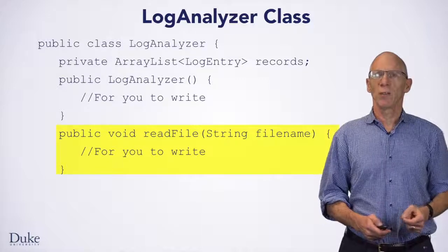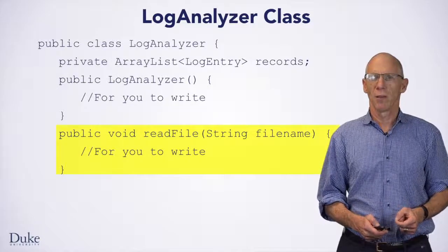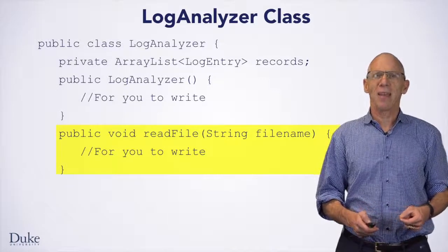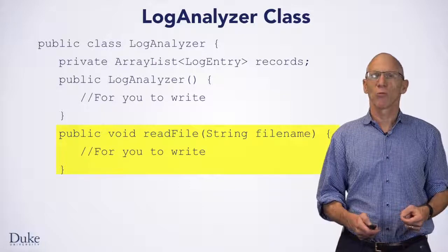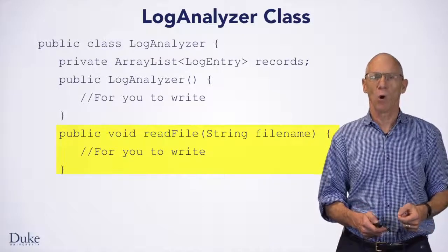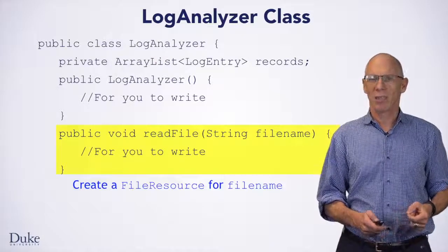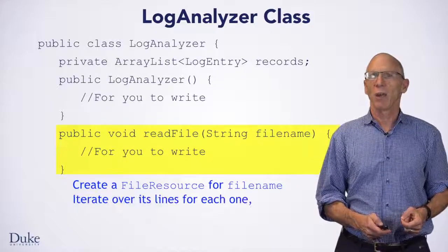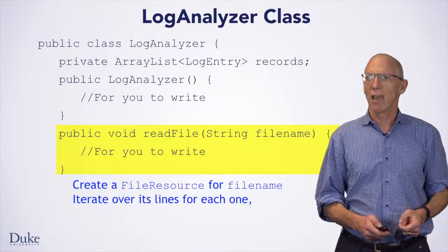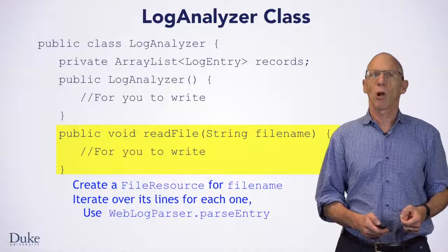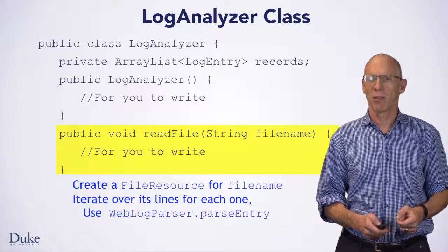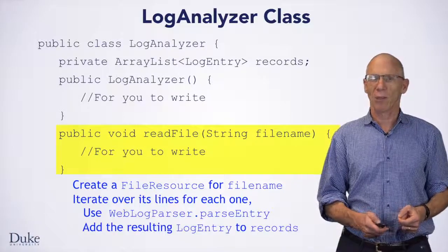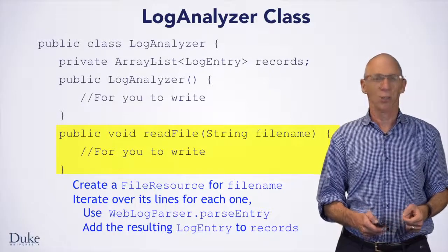The second thing you should do is fill in code for the readFile method. This method will determine the file name to read from, and then add log entries to the records field to reflect the information from the file you opened. To accomplish this task, you will make a FileResource for the requested file, then iterate over the file resource's lines, and for each line use WebLogParser.parseEntry() to convert the line of text into a LogEntry. Then you'll add that log entry to the records field, which is an ArrayList.